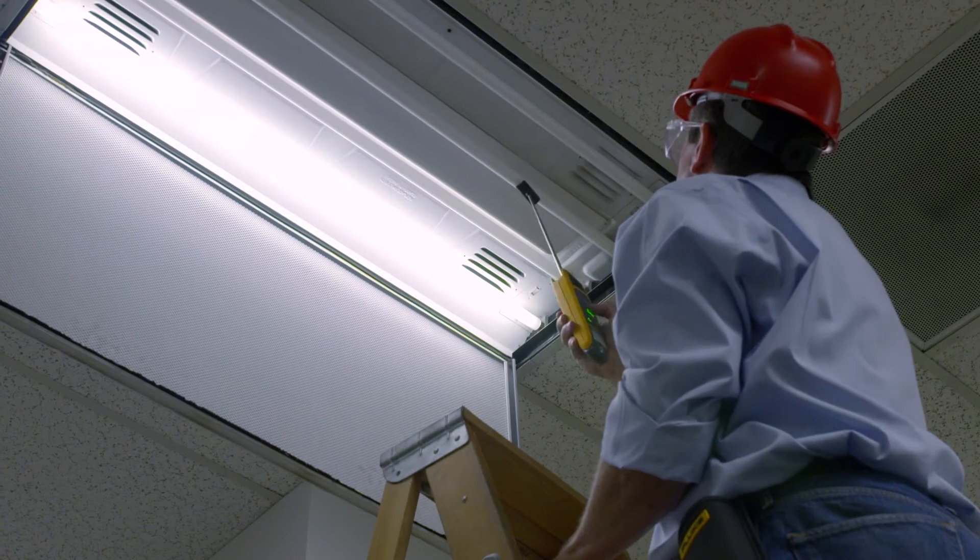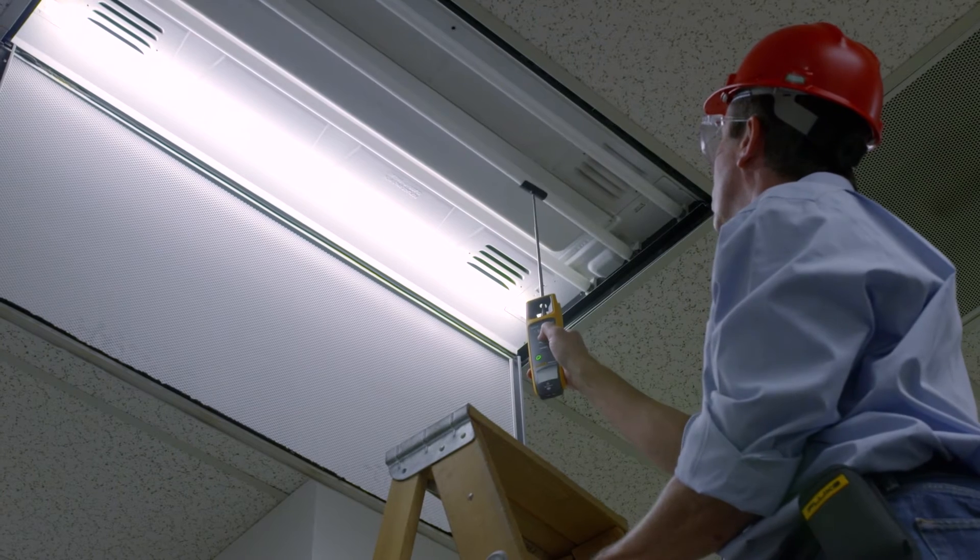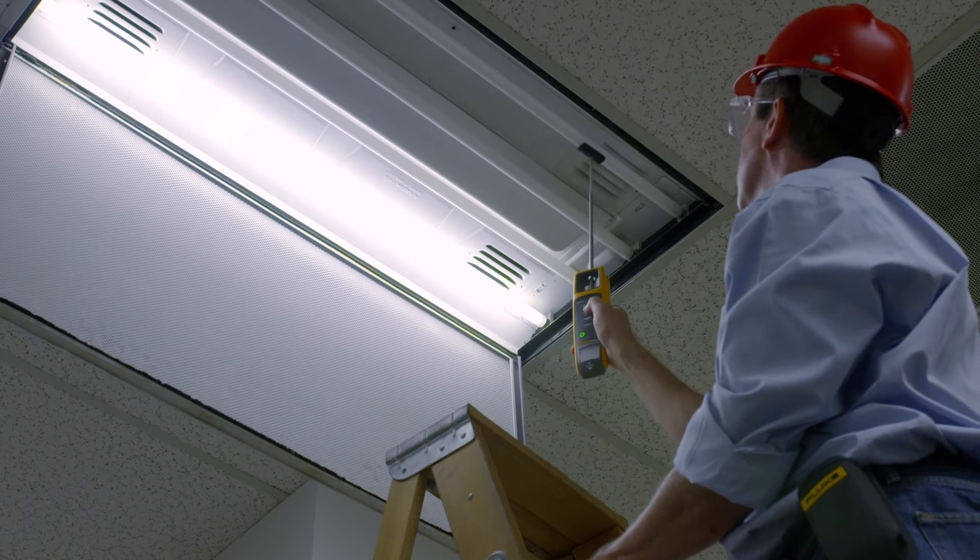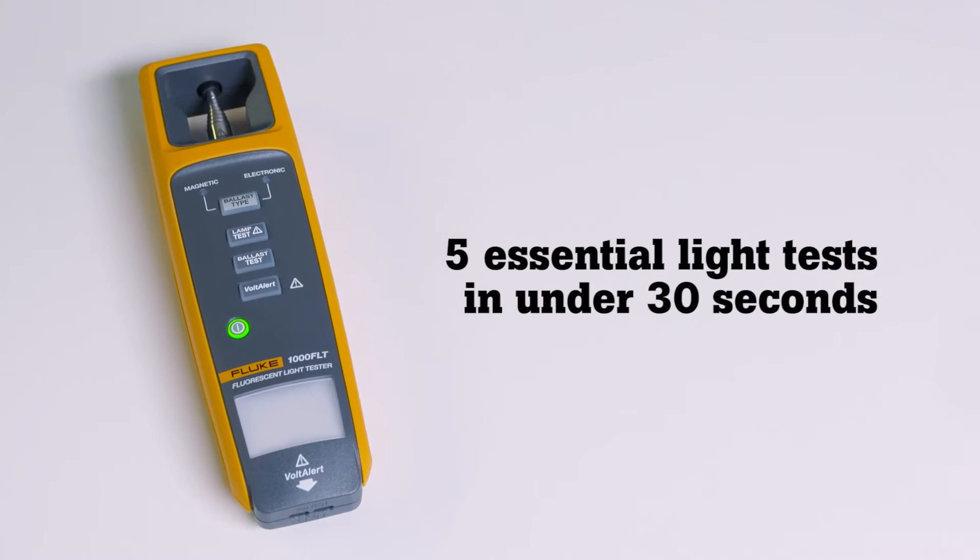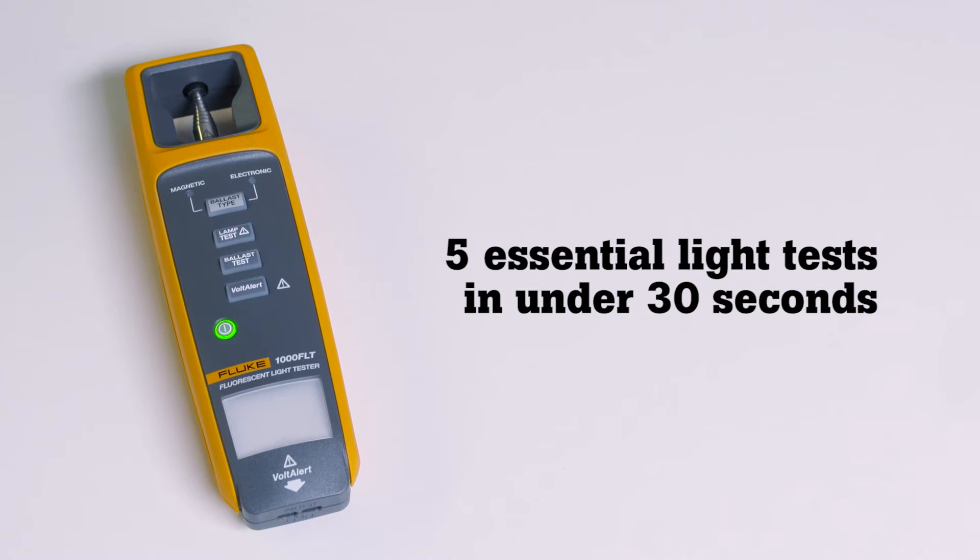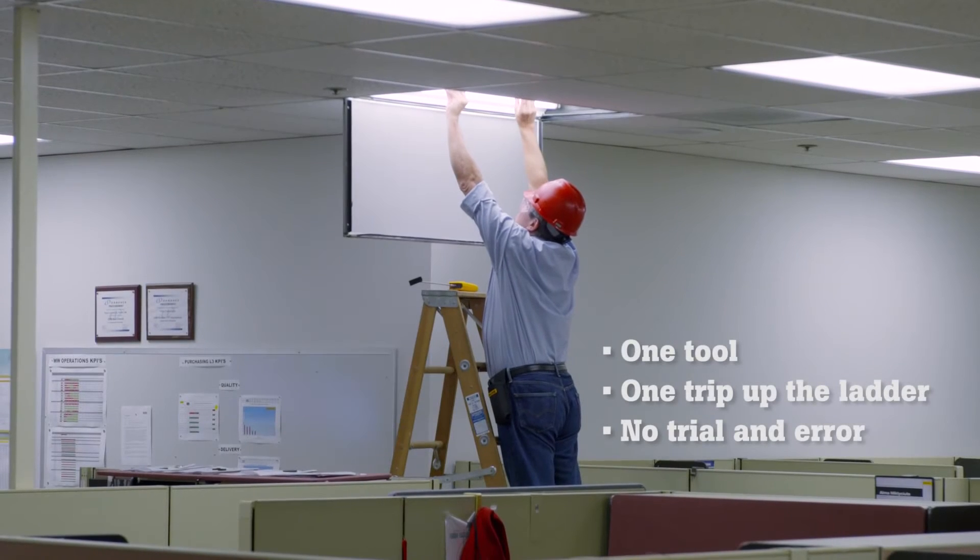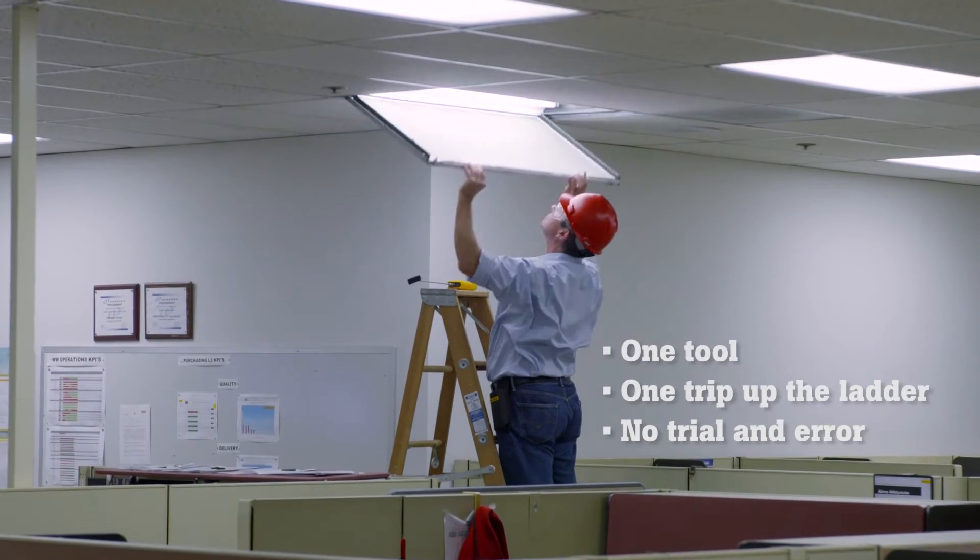Take the trial and error out of fluorescent light testing with the new Fluke 1000 FLT Fluorescent Light Tester, the only tool that performs all five essential lighting tests in under 30 seconds. One tool, one trip up the ladder, and no trial and error.